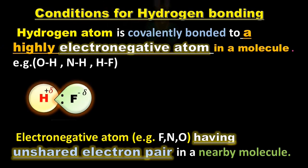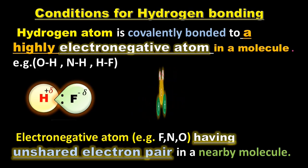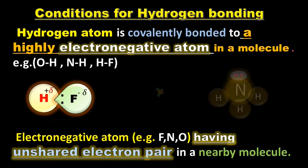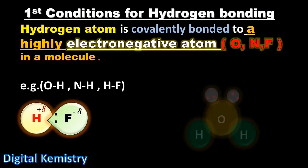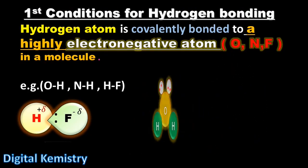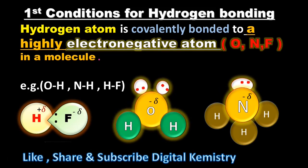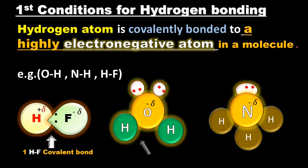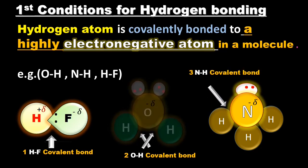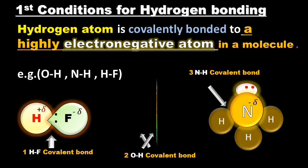Hydrogen bonding को easily understand करने के लिए, हमने hydrogen bonding की definition को two parts में divide किया है, जो कि conditions for hydrogen bonding भी कहलाती है। Hydrogen atom is covalently bonded to a highly electronegative atom in a molecule — for example, OH, NH, NHF। Definition का first part हमें बताता है कि hydrogen atom ने covalent bond बनाया हो किसी highly electronegative atom के साथ molecule में, तभी वो hydrogen bonding में involved हो सकता है।